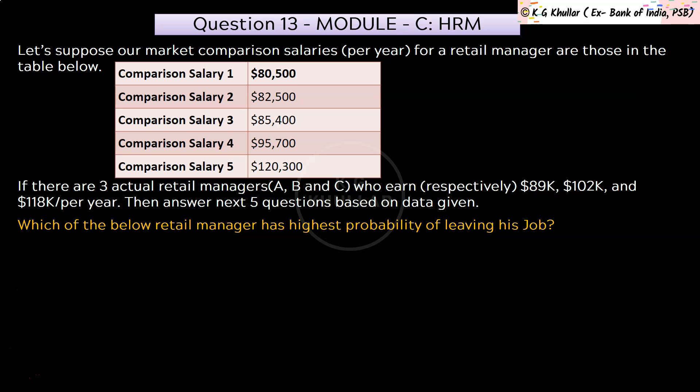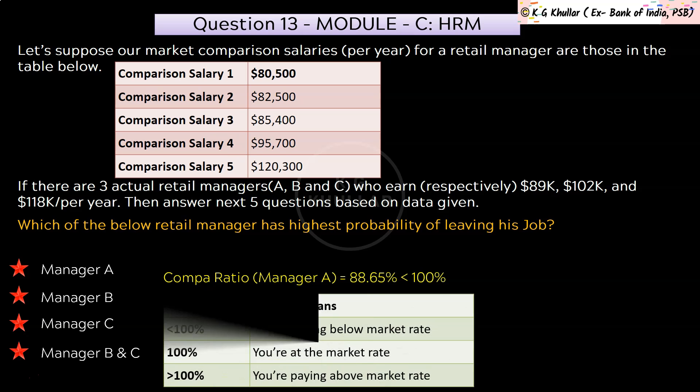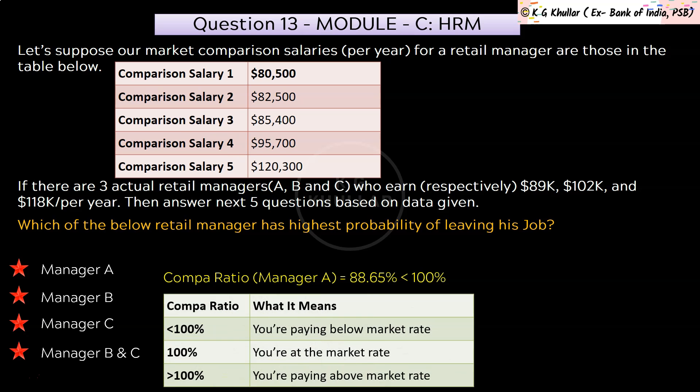The last question of this case study is: which of the retail managers has the highest probability of leaving his job? The correct answer is option A — Manager A has the highest probability of leaving. His compa ratio is 88.65%, which is less than 100%, meaning he is getting paid below market rate. There is a chance he may leave after gaining some experience if his salary is not increased.